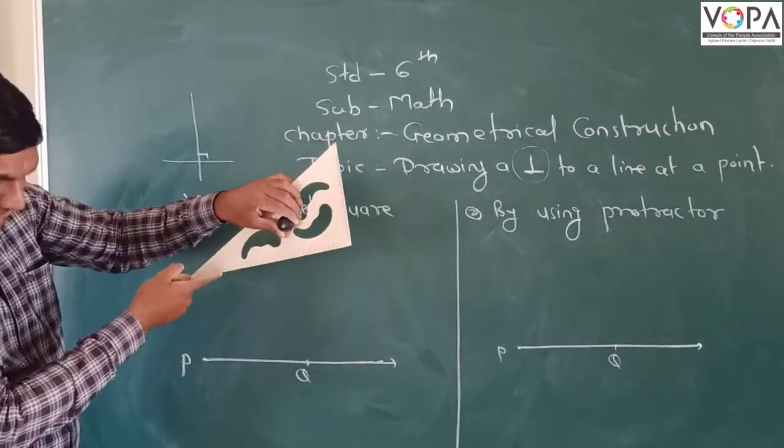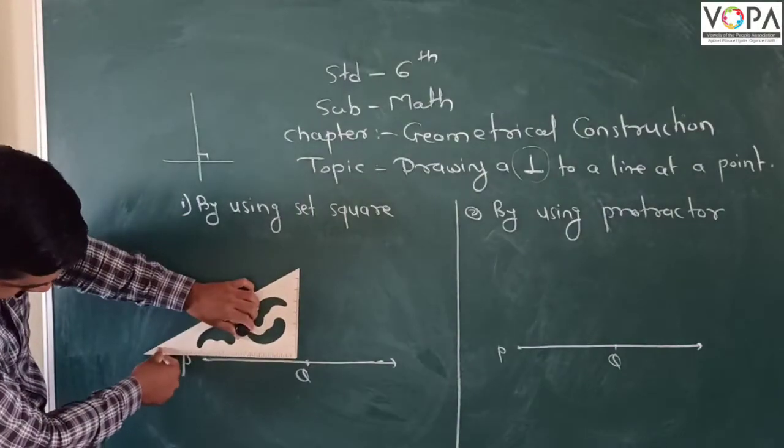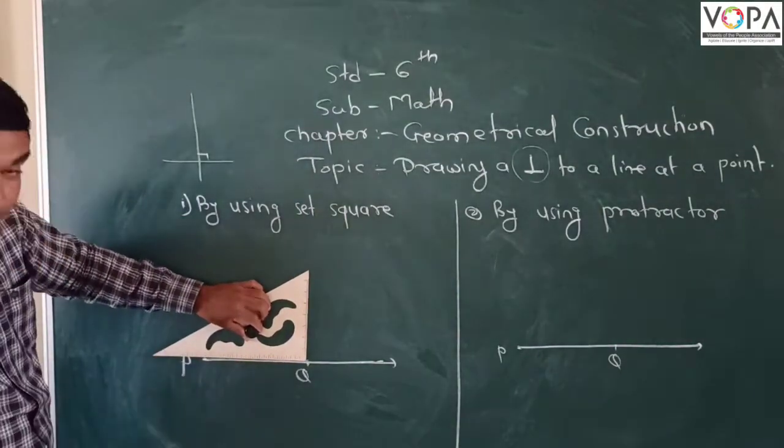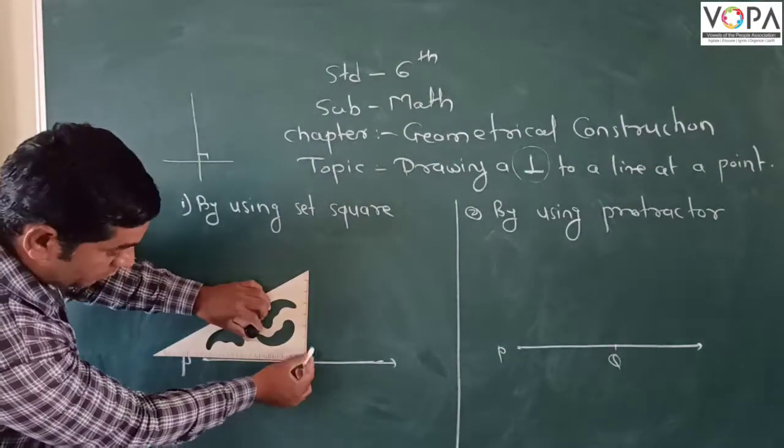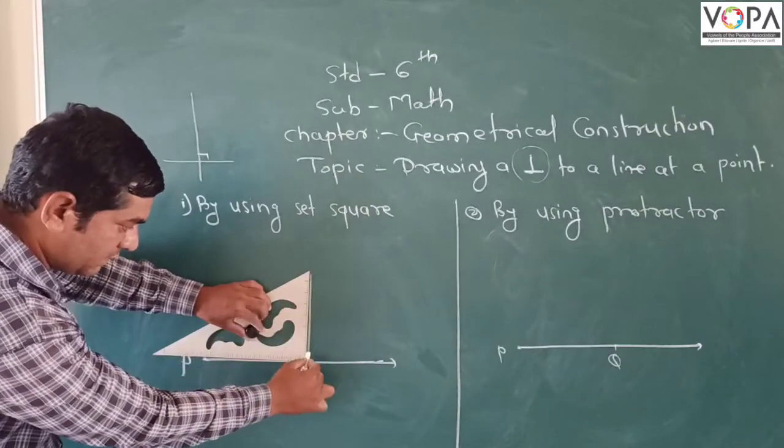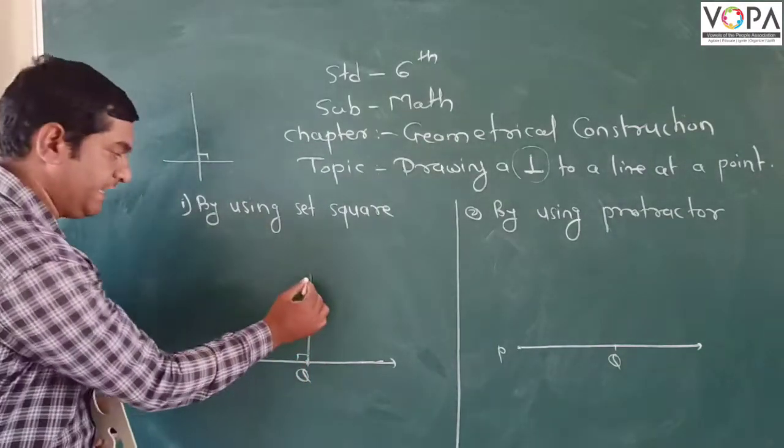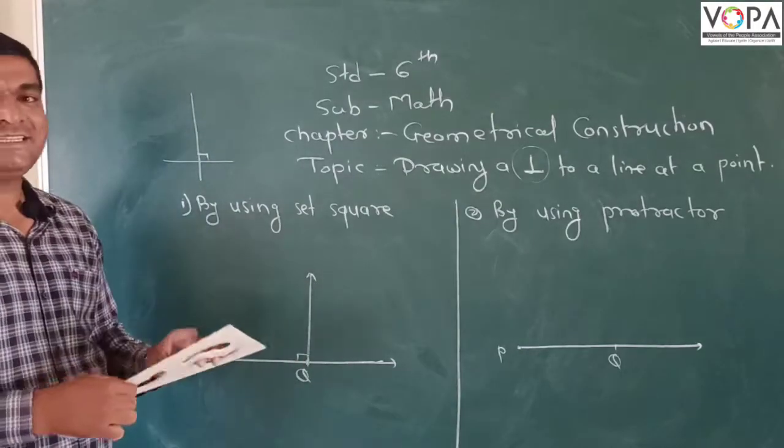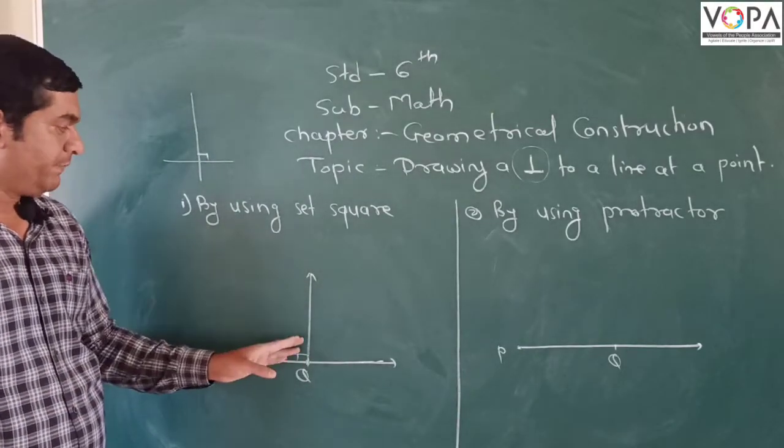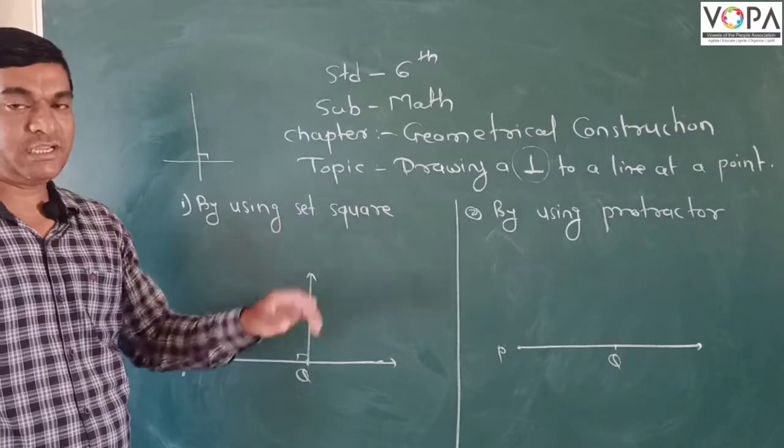So how should we draw that? So take this line like this, then at point Q draw the line like this. Then it makes an angle of 90 degrees. In this easy way we make a perpendicular by using set square.